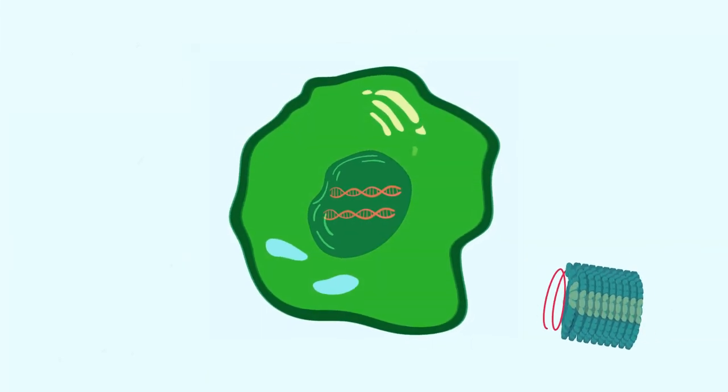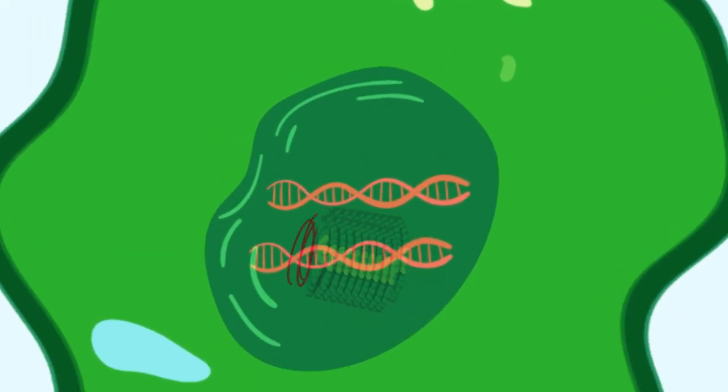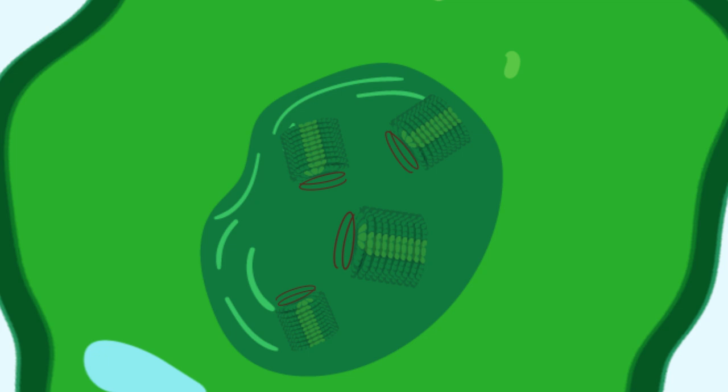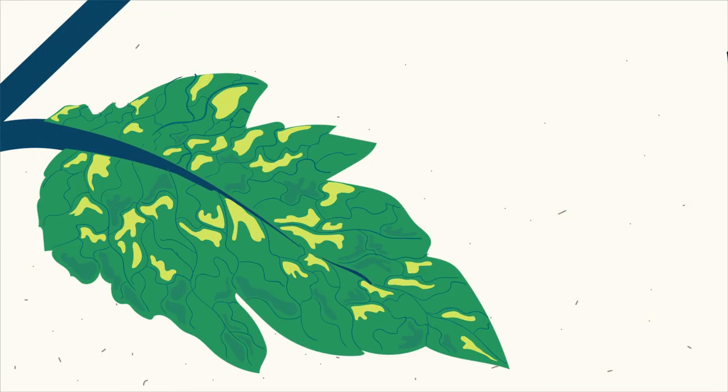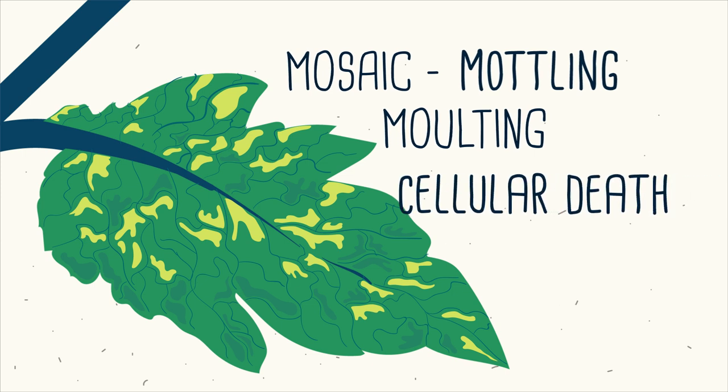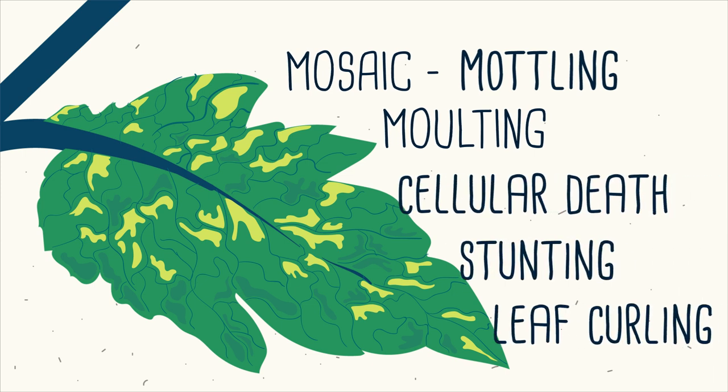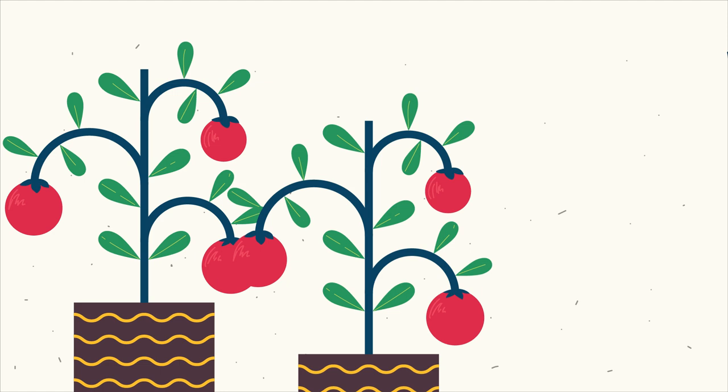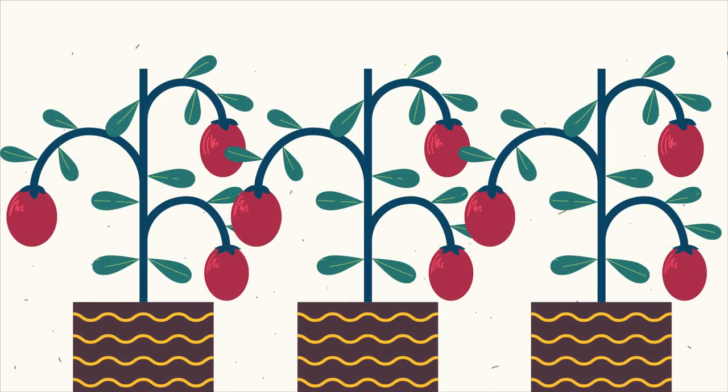It can enter wound sites. Once it's in, TMV can hijack plant cells to aid its own replication. As the name suggests, the virus leaves a mosaic pattern on the leaves and also causes mottling, cellular death, stunting and leaf curling. This virus can devastate tomato crops.